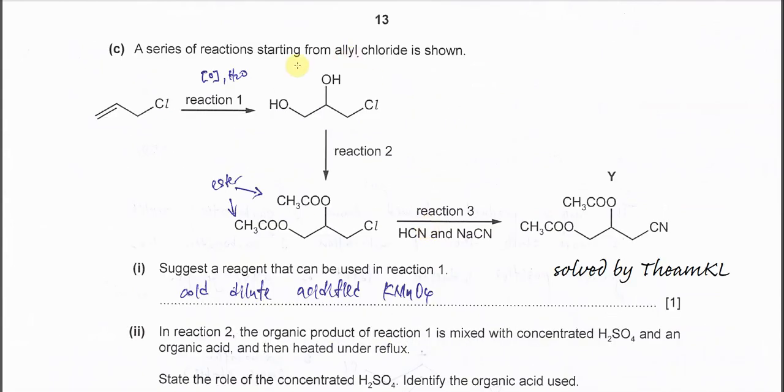Part C. A series of reactions starting from allyl chloride. For reaction 1, the C=C double bond opens up and forms diol because there is an oxidation. After that, the alcohol undergoes reaction 2 to form ester groups, and this is from the carboxylic acid. The carboxylic acid used must be a two-carbon carboxylic acid, so it's ethanoic acid. Reaction 3, the chlorine gets substituted by the cyanide, so this is a substitution reaction.